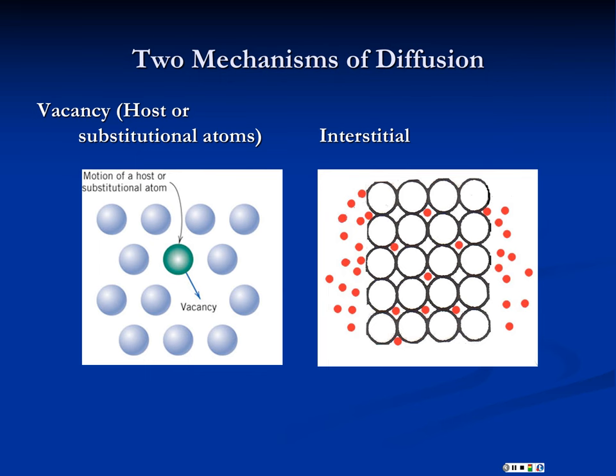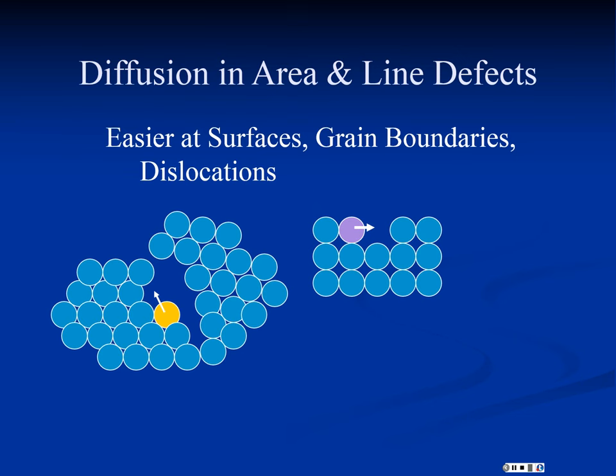So those are our two mechanisms of diffusion. We have vacancy diffusion where an atom moves into an empty spot. And then we have interstitial where atoms move into the gaps between the host material atoms or molecules. And the question is, how easy is this process? And is there a measure for that process? And so we have other conditions that make that process easier.